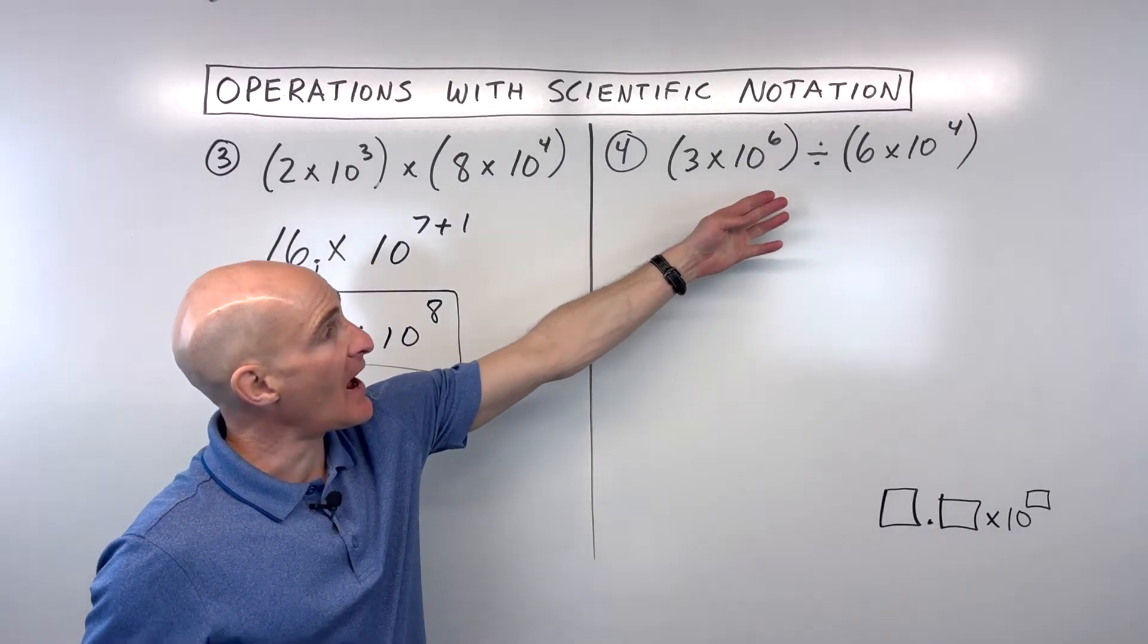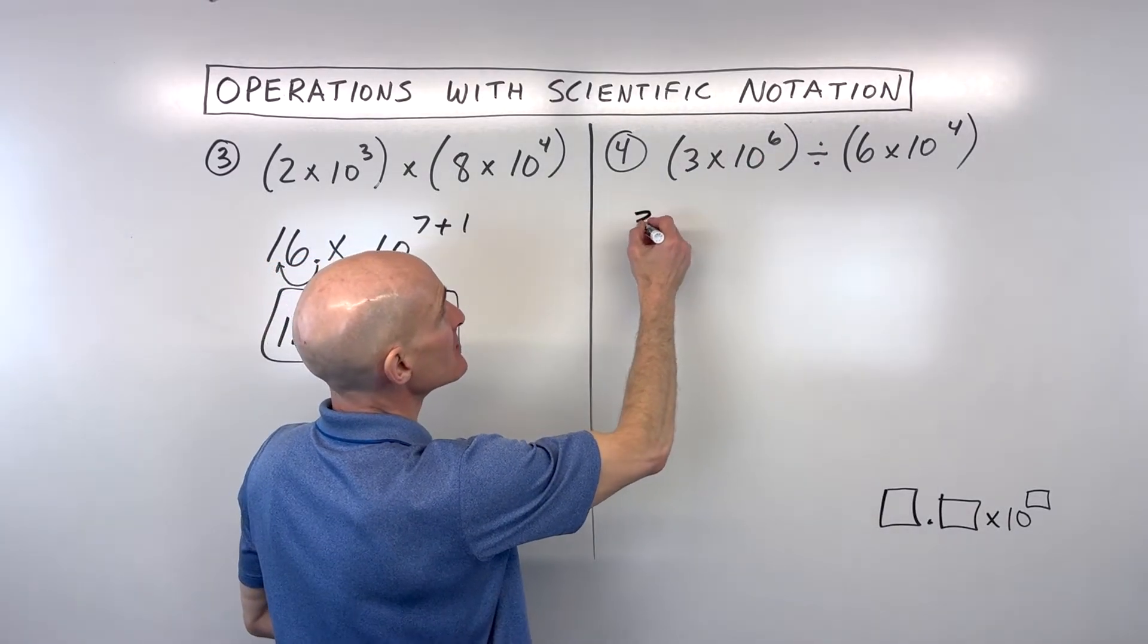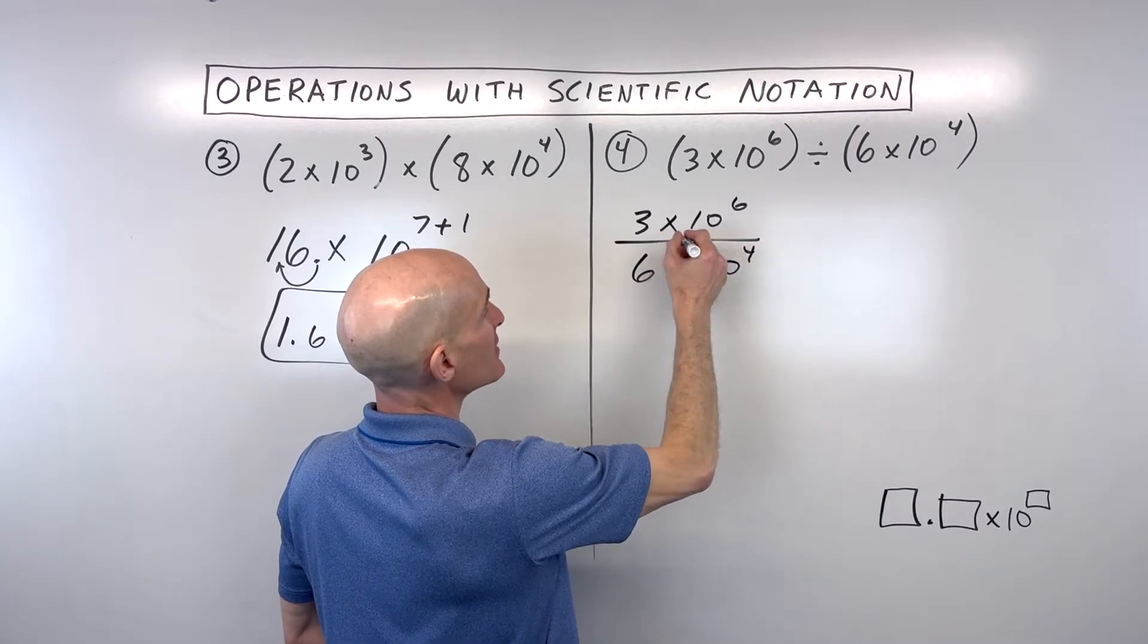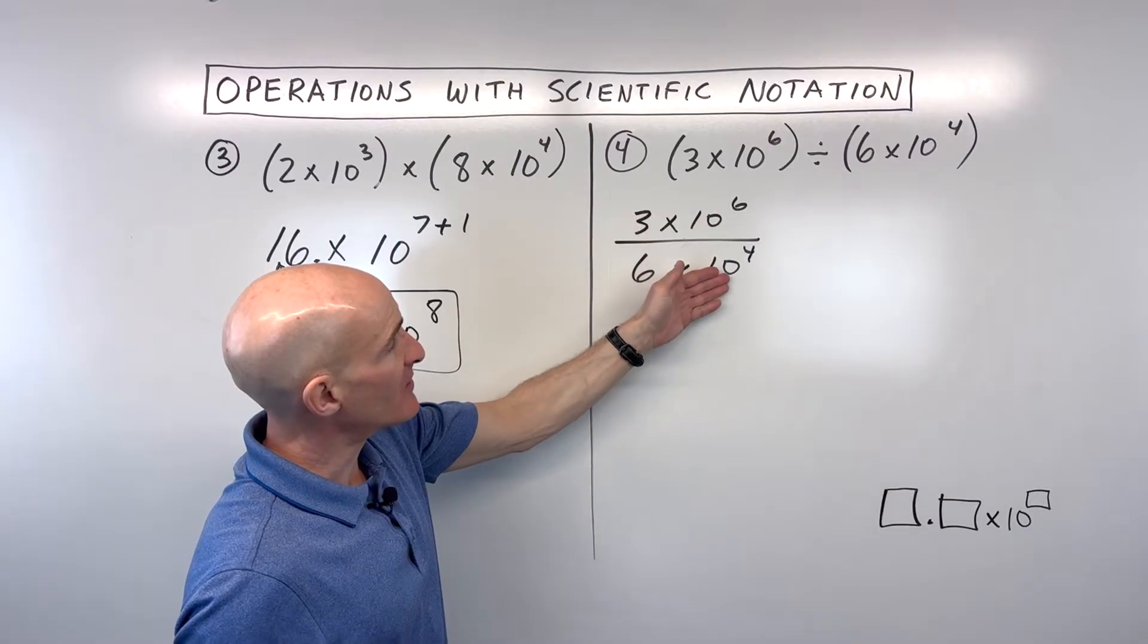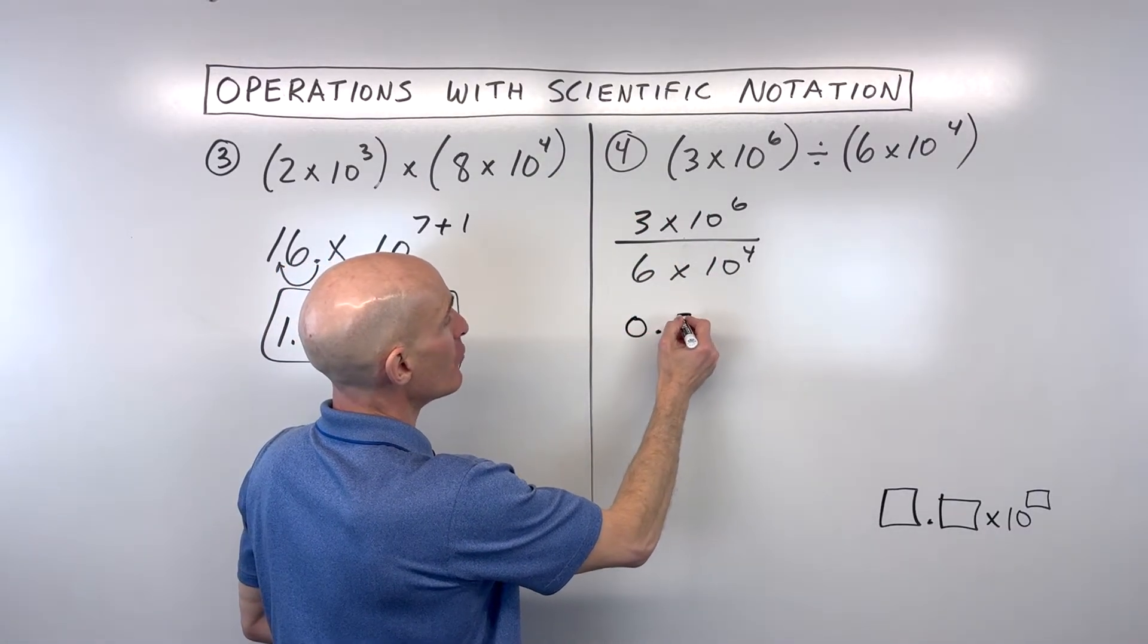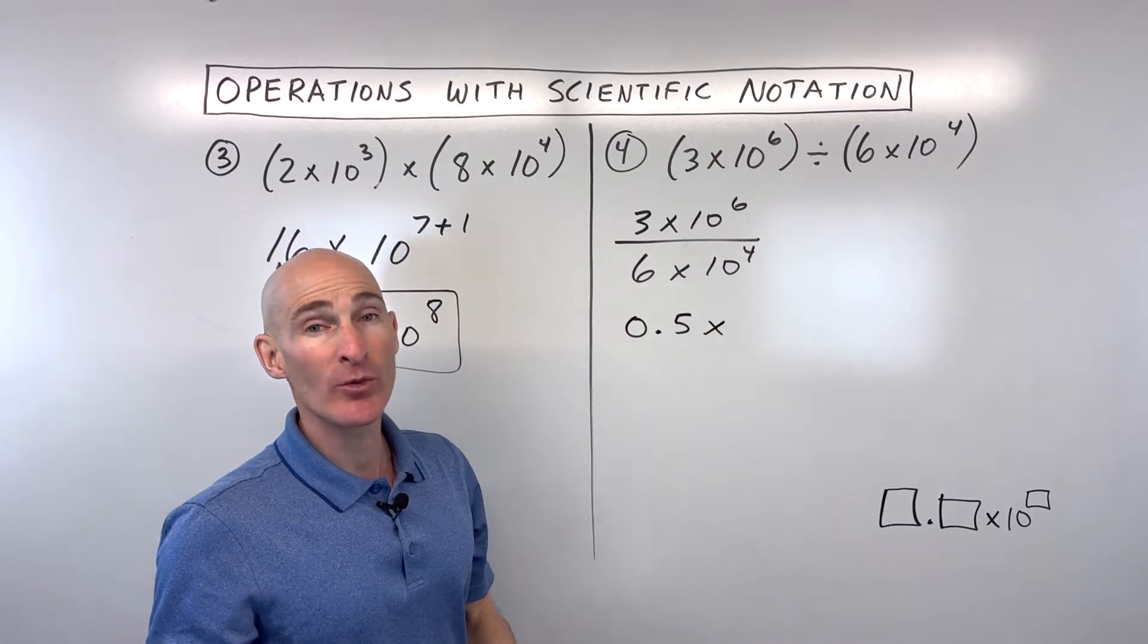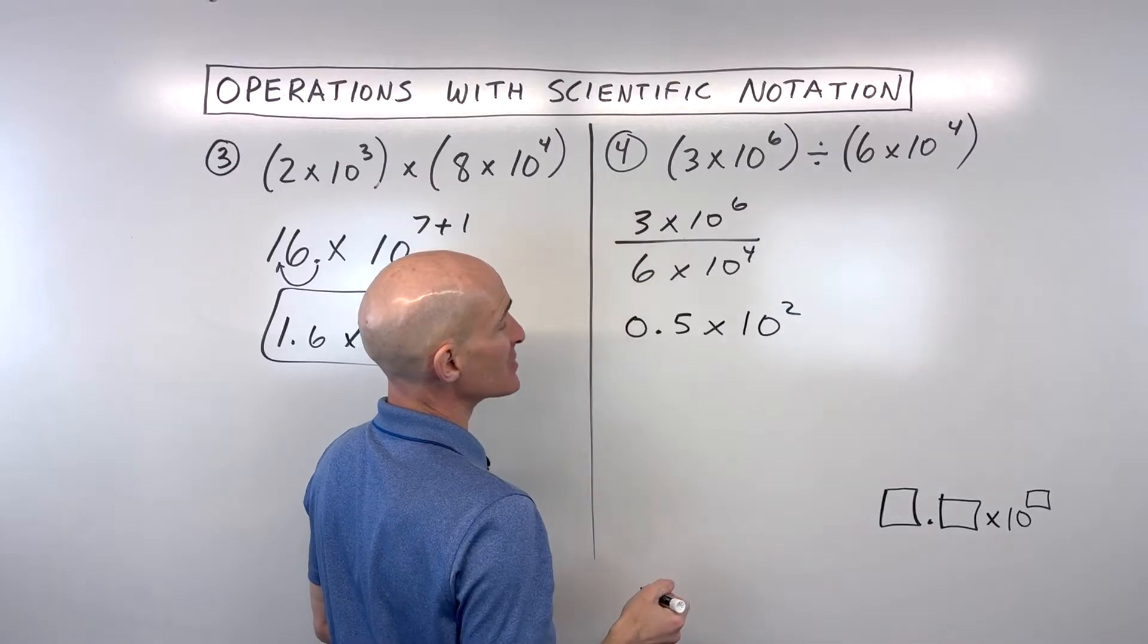Now number four, we're dividing two scientific numbers. You might want to set it up like this: 3 times 10 to the 6 is being divided by 6 times 10 to the 4th. Remember, the fraction bar is like division. So what we do is we divide these numbers and we divide the powers of 10. 3 divided by 6 is 0.5, or a half. And when we divide and we have the same base, what do we do to the exponents? We subtract them. So 6 minus 4 is 2, so this is 10 squared.